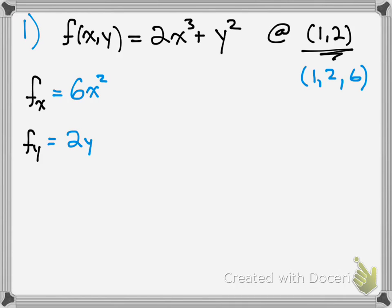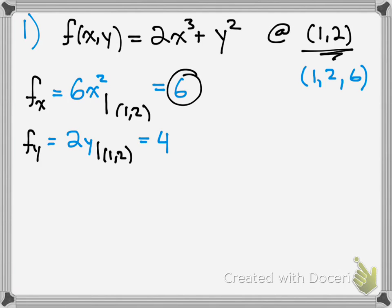Now we evaluate at the given point. Since there's no y in the x partial, evaluate at x equals 1, and the y partial at y equals 2. Plugging in the values, the x partial gives 6, and the y partial gives 4. These numbers represent the slope in the x direction and the slope in the y direction at this point.